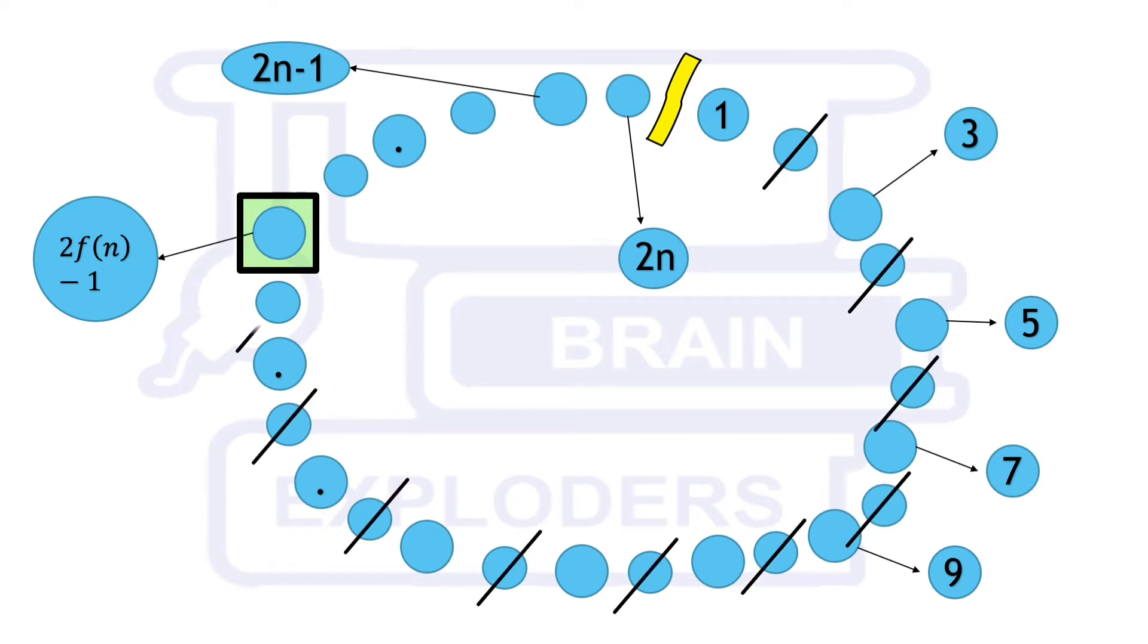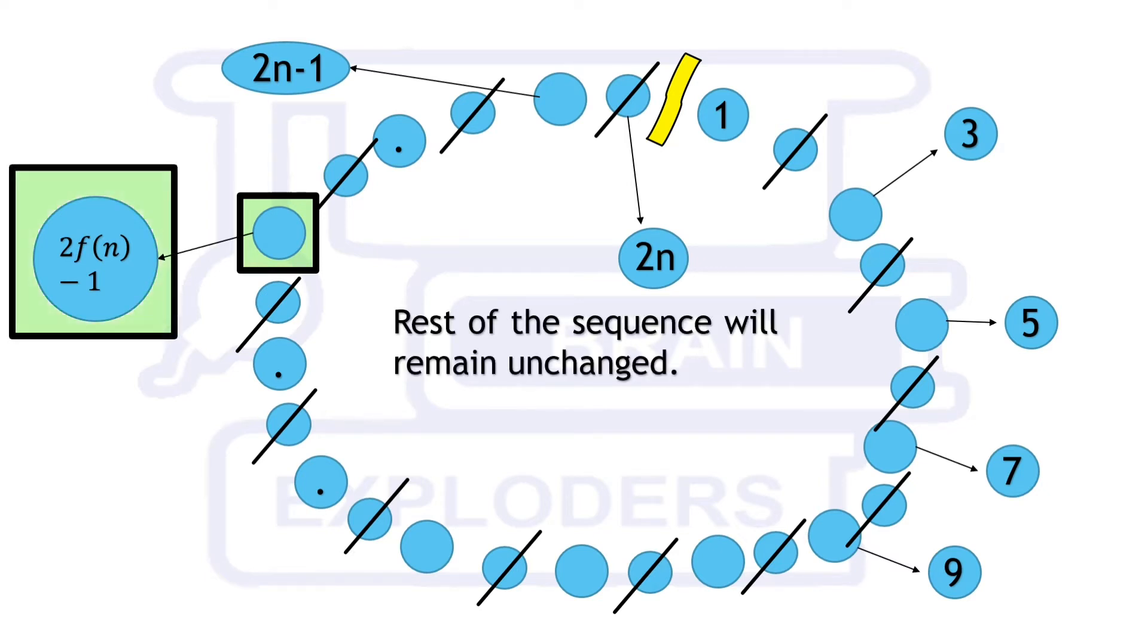So, after one cycle, the problem is reduced to the previous situation except the positions of persons. This time, the last alive person is 2f(n) minus 1 because this is the corresponding position of the last alive person. From this mathematical model, a recurrence formula is obtained: f(2n) equals 2f(n) minus 1. From this, we can calculate the solution for 2n if we know the solution for n.